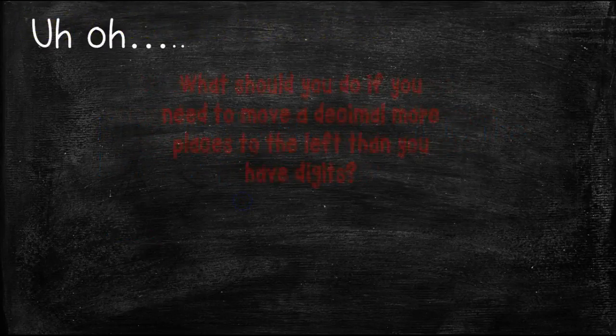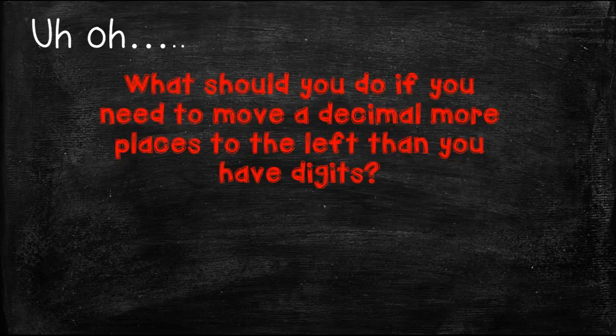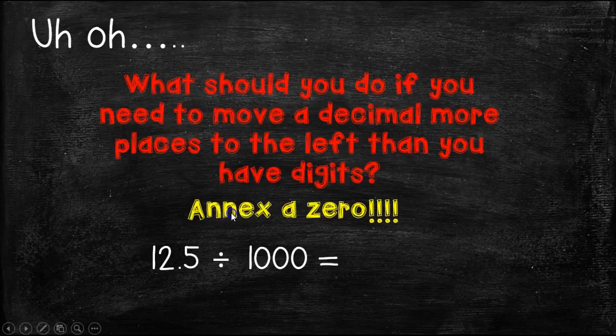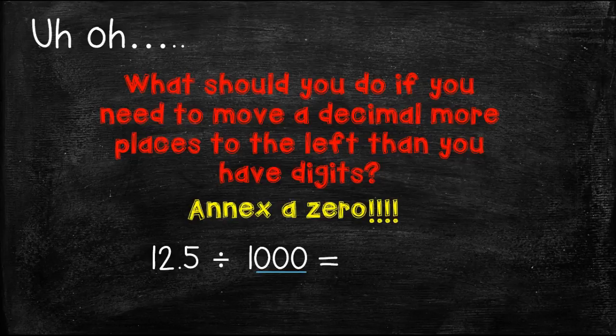Uh-oh. What would you do if you need to move a decimal more places to the left than you have digits? Is that even possible? Well, it is. You just have to annex a zero. Remember, that word annex is our math word for add. So in this case, if we had 12 and 5 tenths divided by 1,000, here we have three zeros. So we are going to need to move the decimal point three places to the left. But here we only have two digits. 1, 2. So what are we going to do? We have to move one more. So that's the third. So we are going to add a zero and move the decimal point. Our answer is .0125.